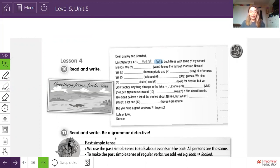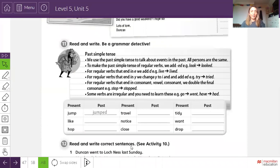Let's continue to the other activity. Activity number 11. Read and write. Be a grammar detective. Here we have the use of Past Simple. We are going to read it. Says, we use the Past Simple tense to talk about events in the past. All persons are the same. Entonces usamos el pasado simple para referirnos a hechos o eventos del pasado. Todas las personas, en este caso, I, you, we, they, he, she, it, van todas igual en el pasado, en afirmación, negación o pregunta.